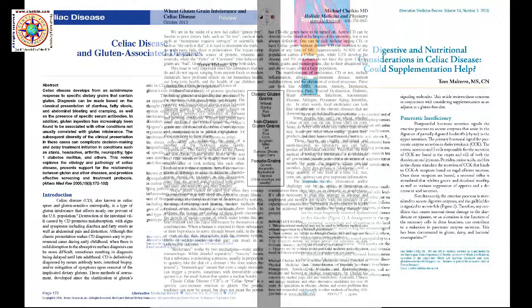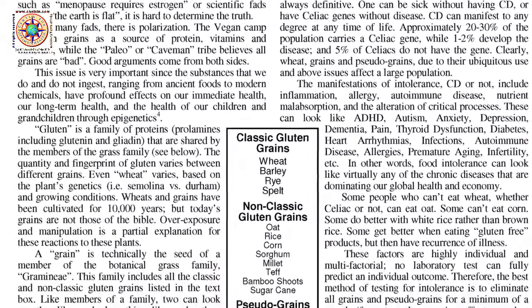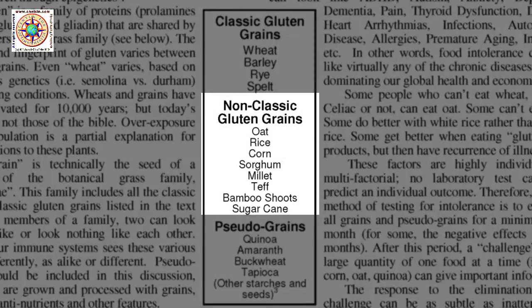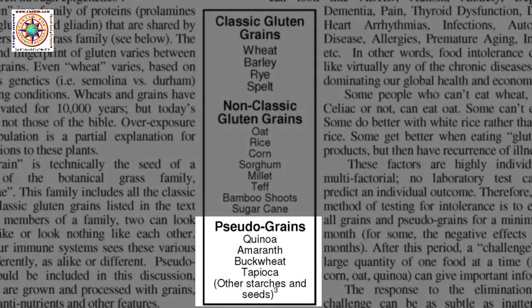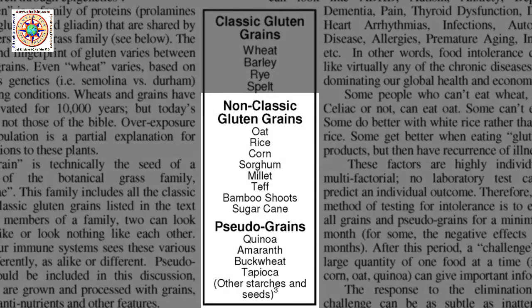Putting this all together, based on these diagrams, the question is: when we go gluten-free, what does that really mean? Gluten-related foods fall into three categories: the classic gluten grains and foods based on them; the non-classic gluten grains, which are in the same family and share at least some of the proteins; and foods from other botanical families that share characteristics and proteins with the gluten grains. We prefer to avoid using the term gluten-free, since there is such a lack of precision nowadays.